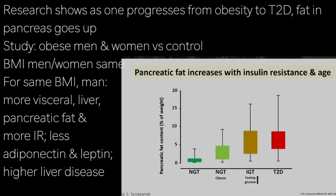Lydia Shishipank has shown that as you progress from normal to obesity to pre-diabetes and type 2 diabetes, the amount of fat in your pancreas goes up.